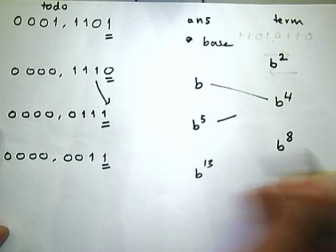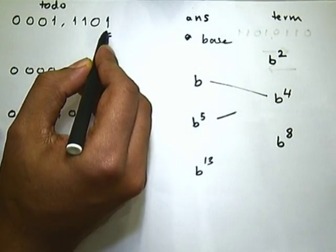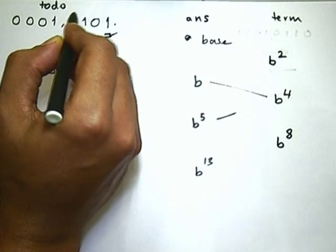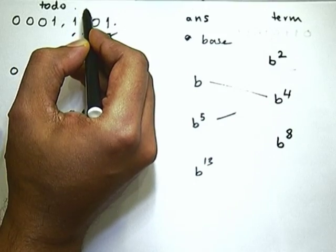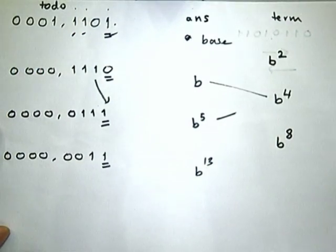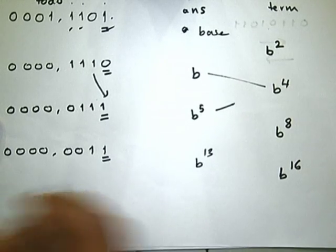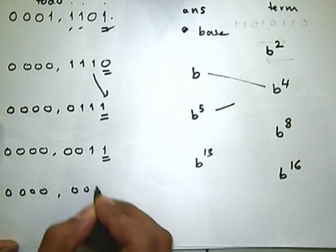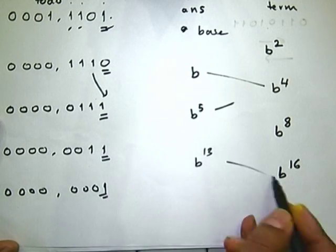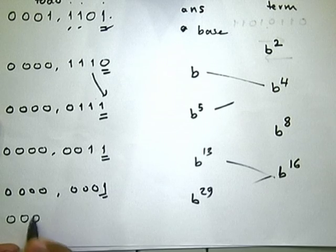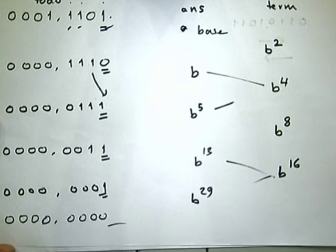At the end, answer is base^29, which is exactly what we wanted. The total number of multiplications is much smaller — roughly log₂(29) steps, choosing the appropriate powers from the binary representation of 29: 8 + 4 + 1 = 13 for intermediate, then adding 16 for the final result.